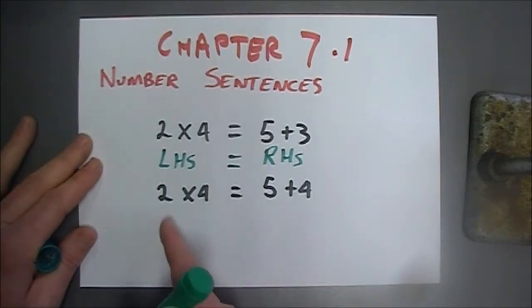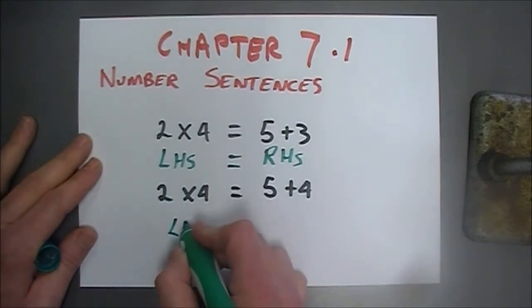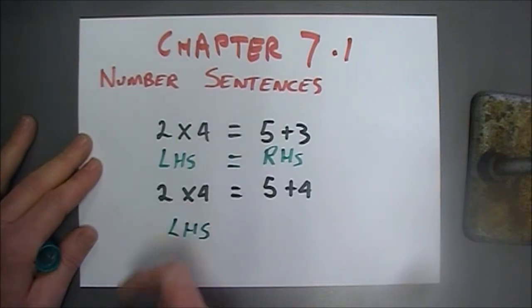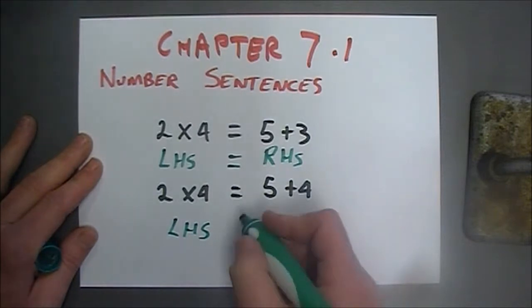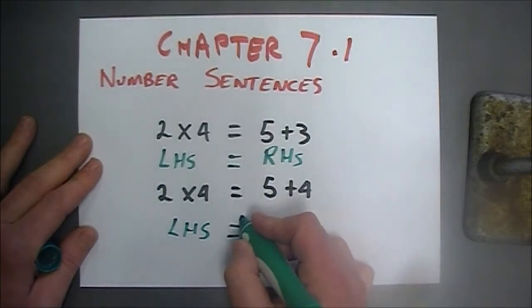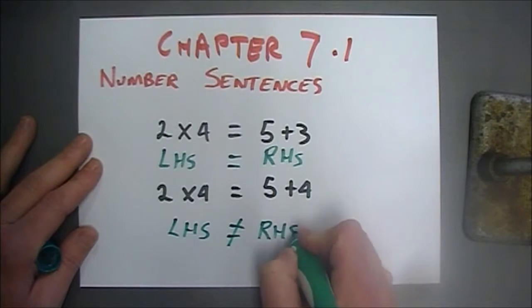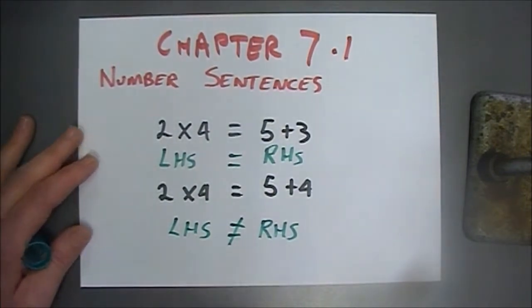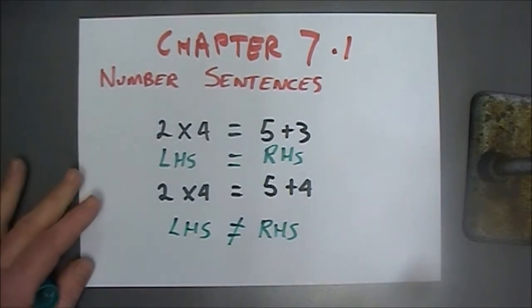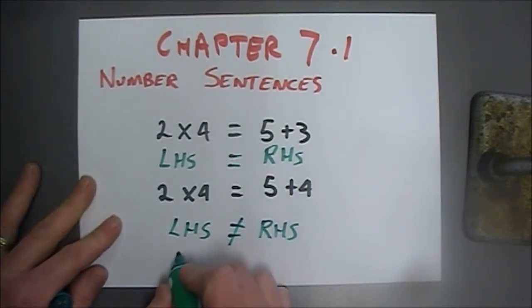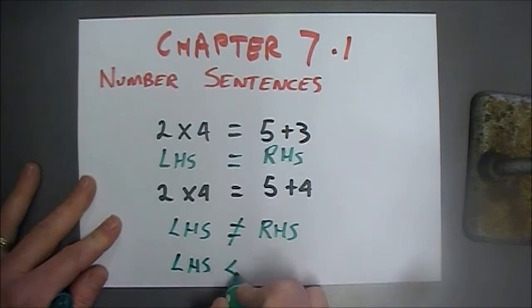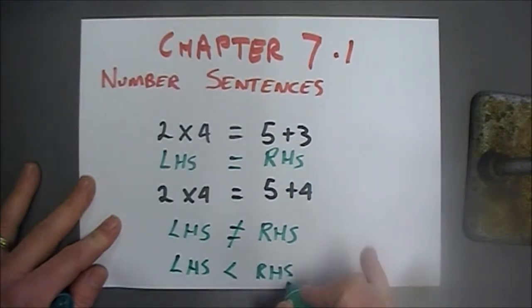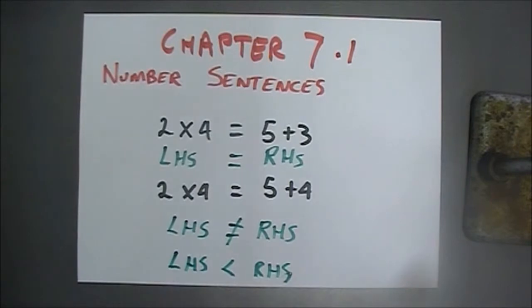In our other example, the left-hand side gives us 2 times 4 is 8, but 5 plus 4 is 9. So we say the left-hand side does not equal the right-hand side. That's our symbol for not equal. We can also say that the left-hand side is smaller than the right-hand side — another way of expressing it using the greater than or less than symbols.